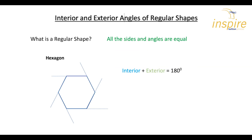Hi guys! We're going to have a look at interior and exterior angles today. We're going to consider these four regular shapes. A regular shape is where all the sides and angles are equal. We will look at these angles in more detail, and it will become more clear when we say that the angles are equal. You can see on this hexagon that it has six sides and they're equal.